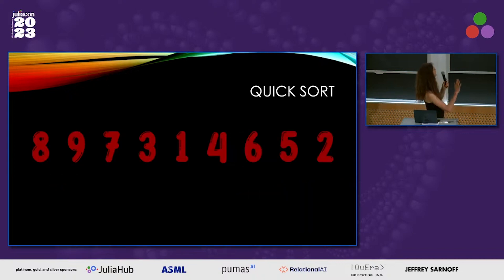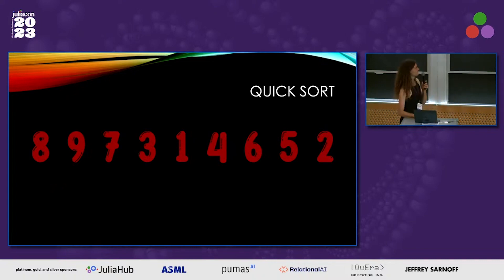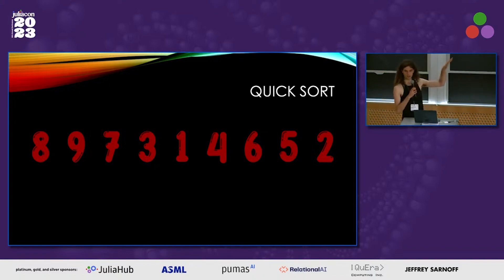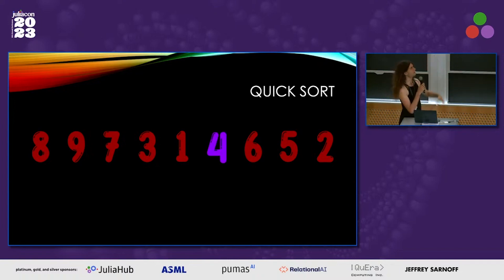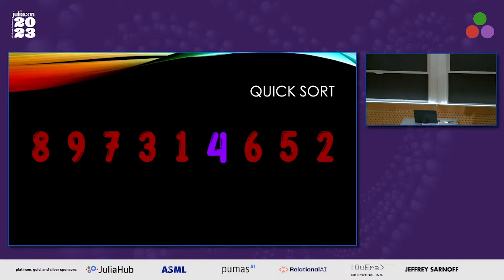Quicksort is a pretty cool algorithm — pretty quick, sorts things. It's a divide and conquer, so it partitions the input. It picks a pivot, say four — just picks a random element. Let's say it picks four.